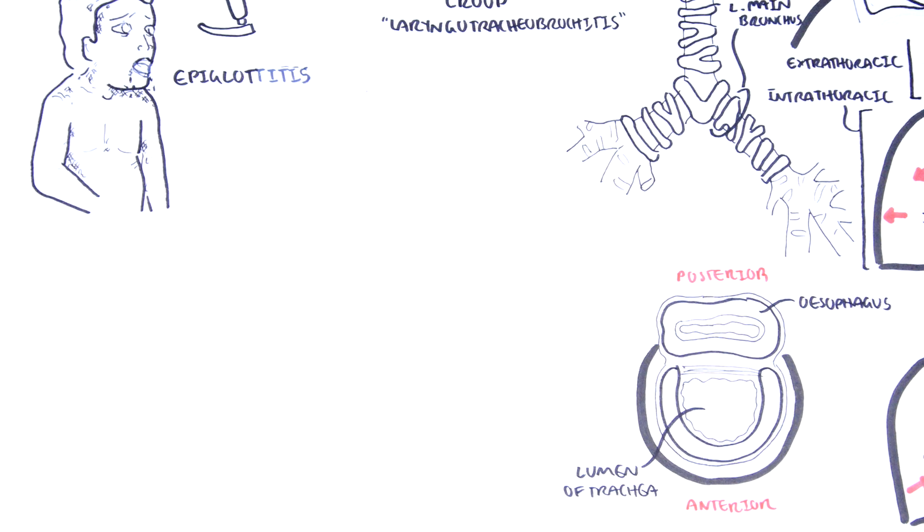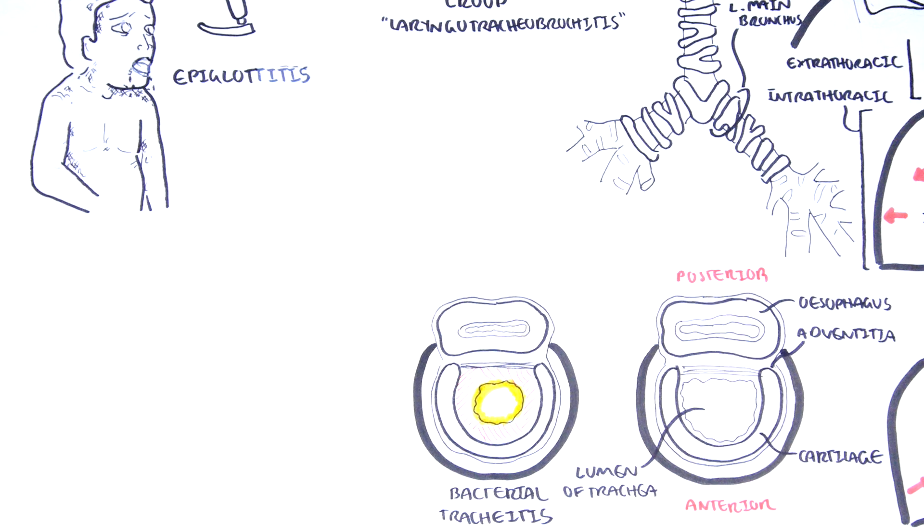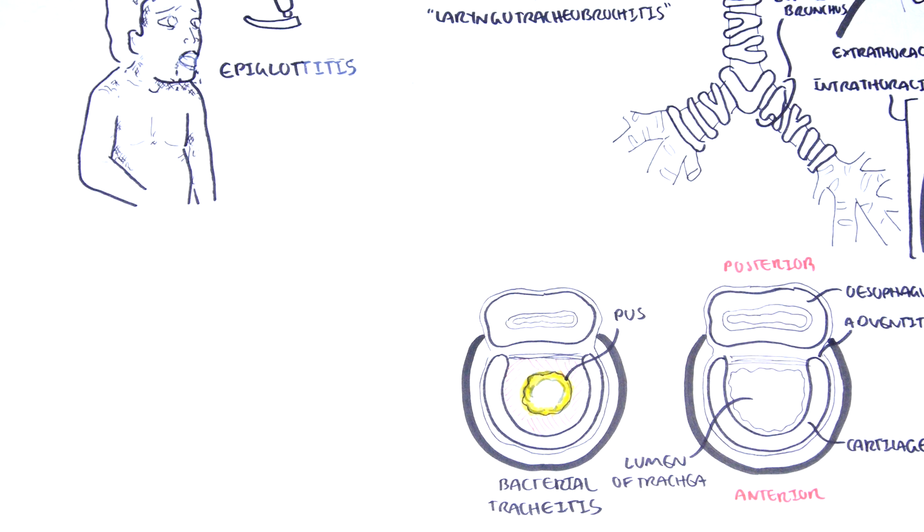The trachea is made up of cartilaginous rings, and here is the lumen of the trachea continuing to the lower airways. The adventitia is shared between the esophagus and the trachea. Bacterial tracheitis is infection of the trachea. Stridor here is caused by subglottic edema and mucopurulent secretions in the airway due to infection, most commonly Staphylococcus aureus.